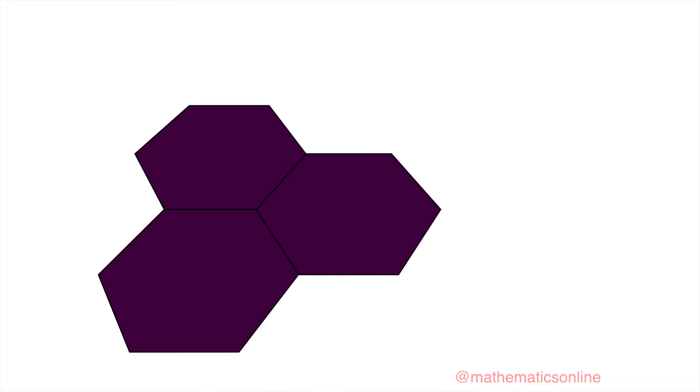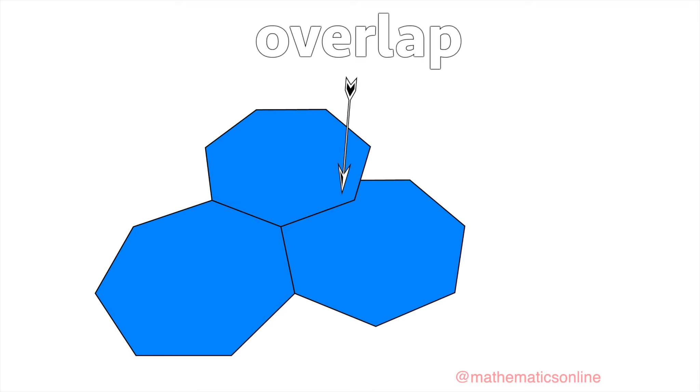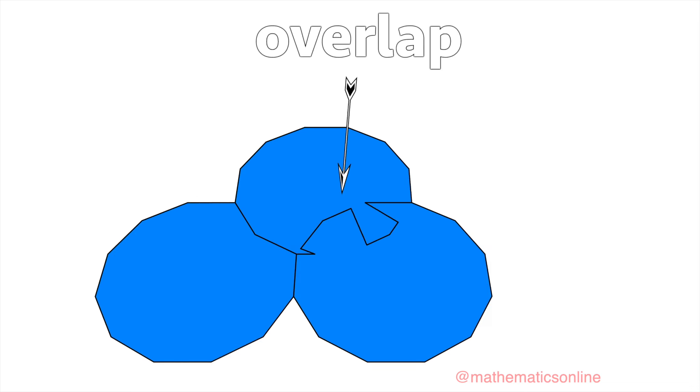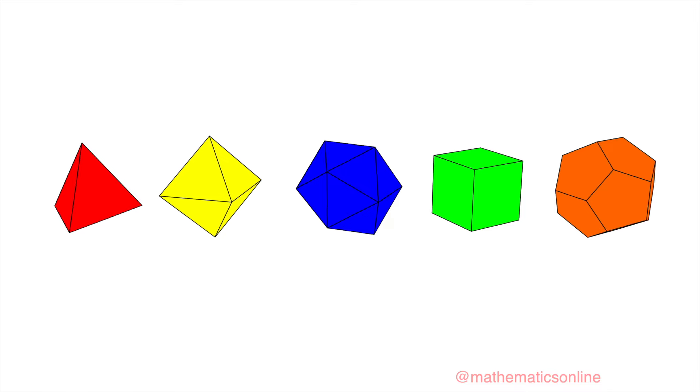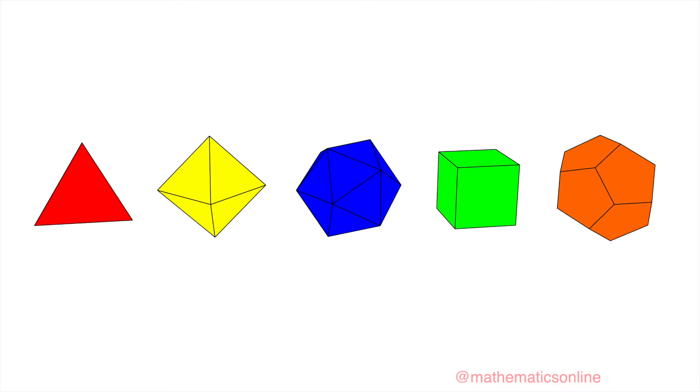If we continue with the hexagon, three hexagons actually form a plane and there are no gaps to close. And if we continue with regular polygons with more than six sides, such as the heptagon with seven sides, the polygons will just begin to overlap. This pattern will continue for all polygons with more than six sides. Therefore these are the only five Platonic solids that exist.